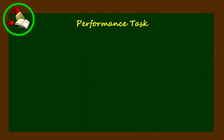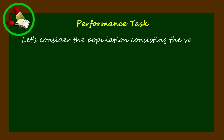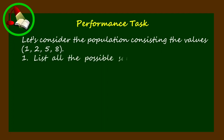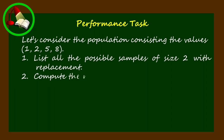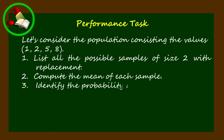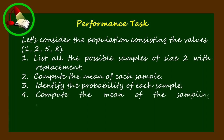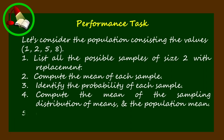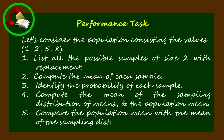Here's the performance task. Consider the population consisting of the values 1, 2, 5, and 8. Number 1: list all the possible samples of size 2 with replacement. Number 2: compute the mean of each sample. Number 3: identify the probability of each sample. Number 4: compute the mean of the sampling distribution of means and the population mean. Number 5: compare the population mean with the mean of the sampling distribution of means.